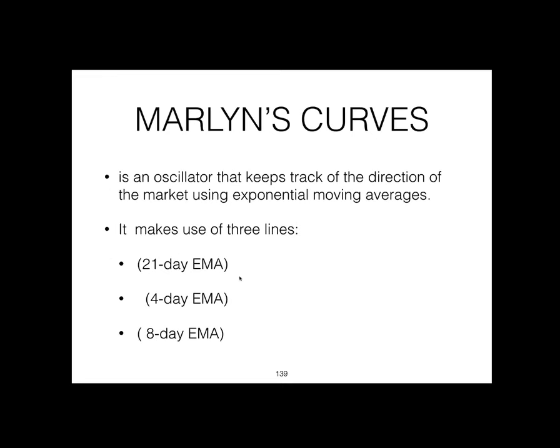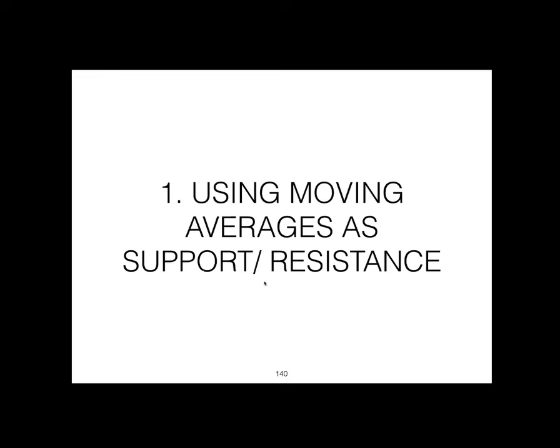Marlin's Curves is an oscillator that makes use of three exponential moving average lines: the 21-day EMA, the 4-day EMA, and the 8-day EMA. The first use of moving averages is as support and resistance lines.